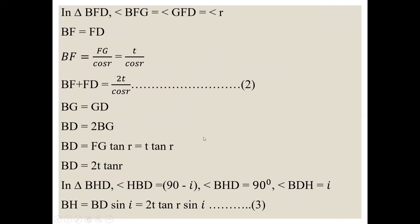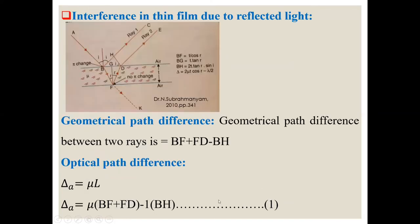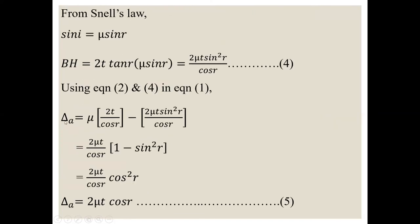Using equation 2 and 4 in equation 1. So we get delta is equal to mu into 2t upon cos r minus 2 mu t sin square r upon cos r. So 2 mu t upon cos r into 1 minus sin square r. So 1 minus sin square r is cos square r. So delta is equal to 2 mu t cos r. After simplifying this, we get equation 5.